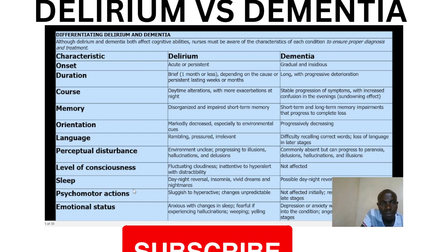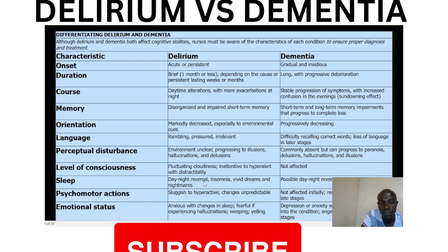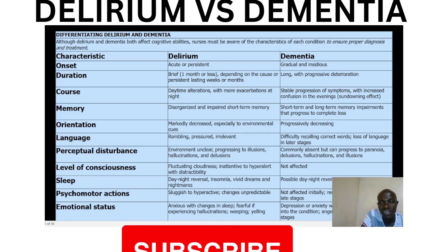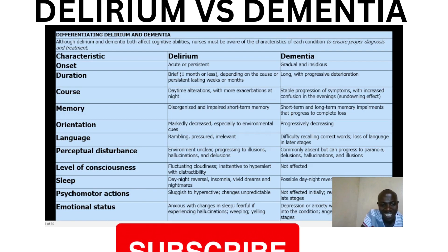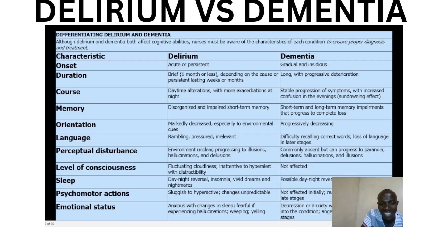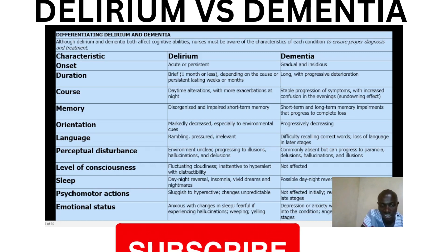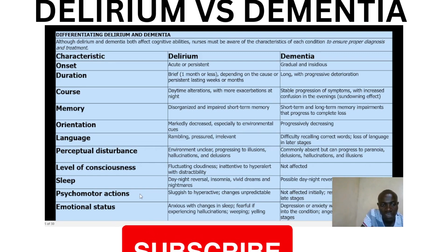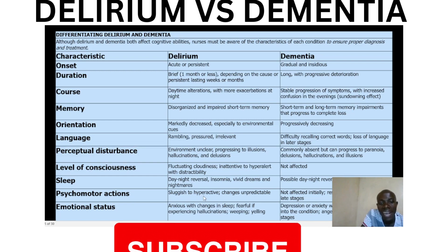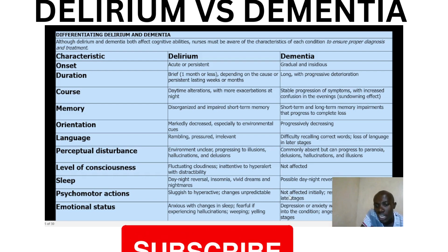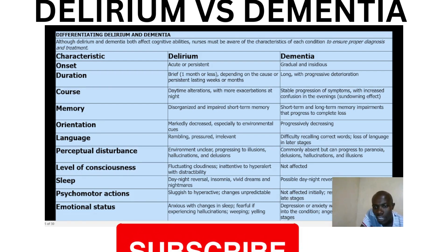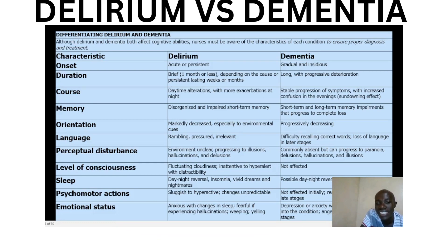In terms of sleep, in delirium we have day-night reversal — someone is sleeping during the day and very active at night. They may also have insomnia, vivid dreams, and nightmares. In dementia, possible day-night reversal occurs only in later stages, not in early stages. Regarding psychomotor actions, in delirium they are sluggish to hyperactive with very unpredictable changes. In dementia, psychomotor actions are not affected initially, with patients becoming restless and pacing only in late stages.